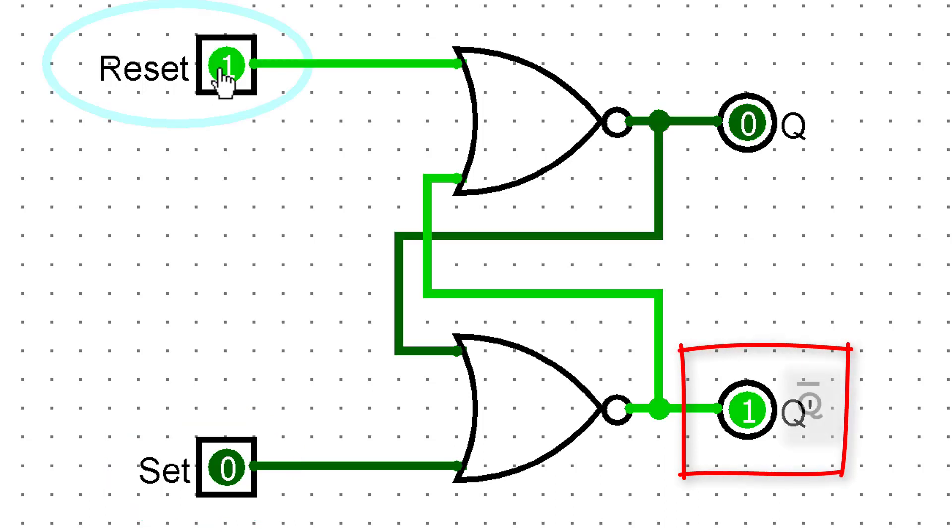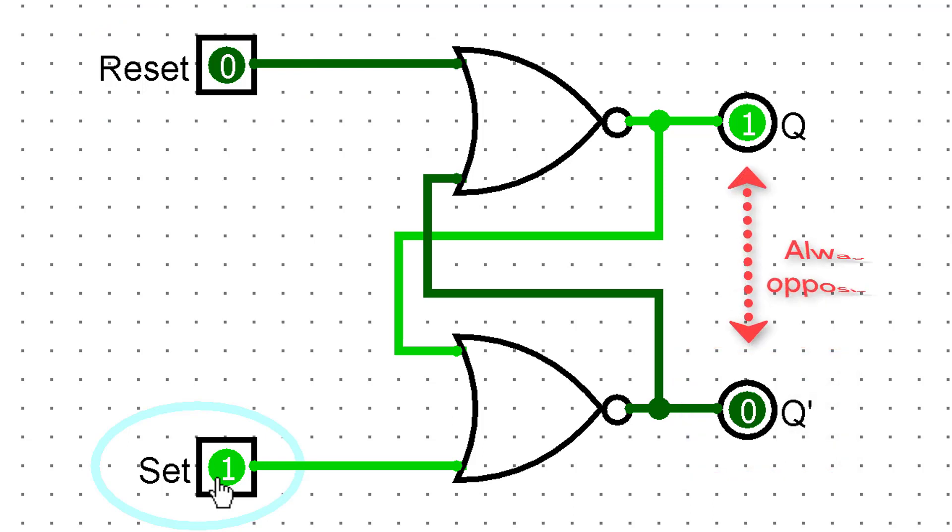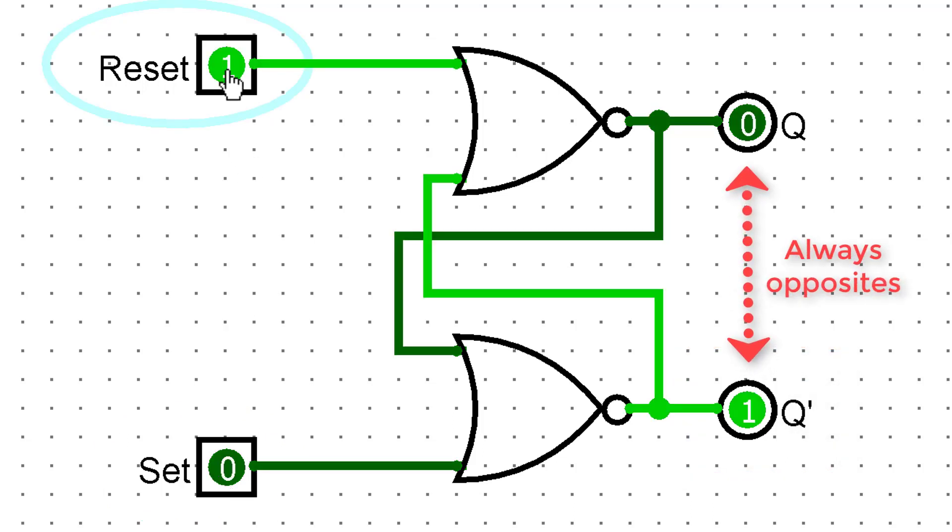We also see q prime, sometimes written q bar, i.e. q with a line over it. This indicates that it outputs the opposite of q. This can sometimes be useful to optimize subsequent gates attached to the output of the latch.